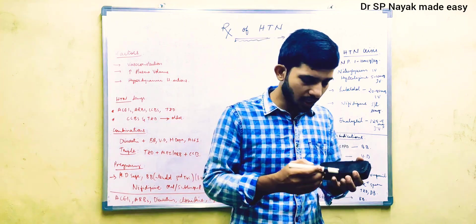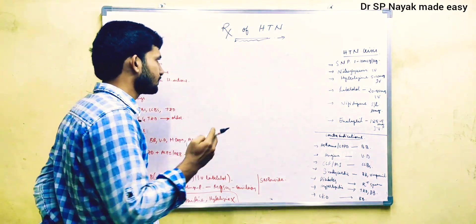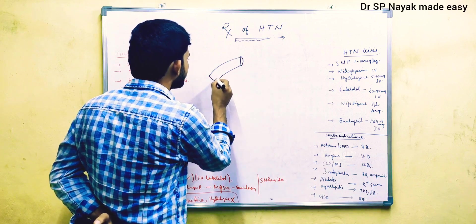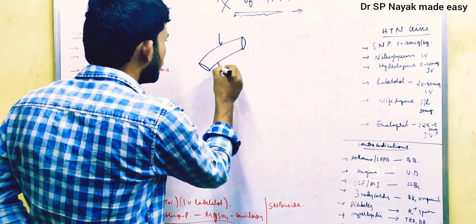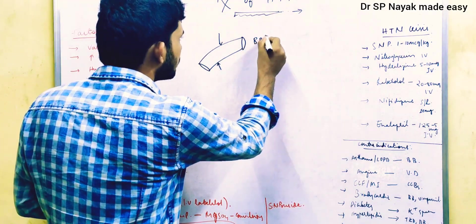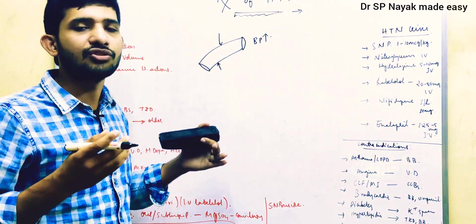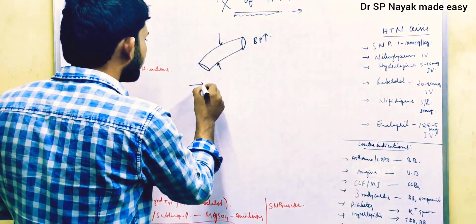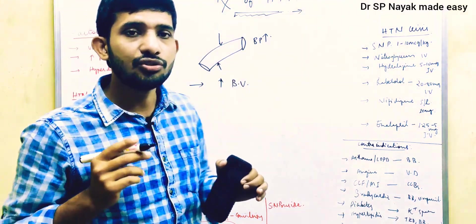Hypertension is usually caused by three major factors. The first factor is vasoconstriction, which reduces the lumen of blood vessels and increases blood pressure. This factor should be reduced using vasodilators, calcium channel blockers, or ACE inhibitors.